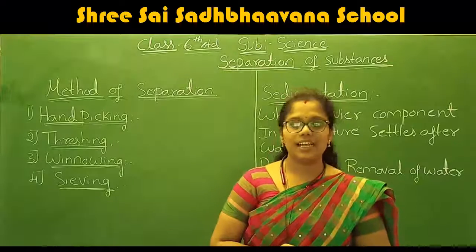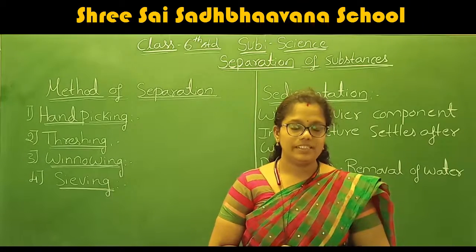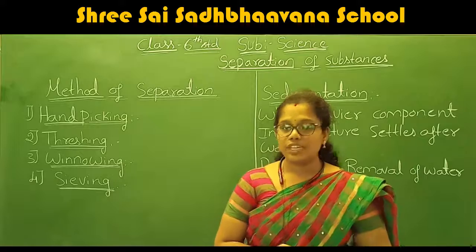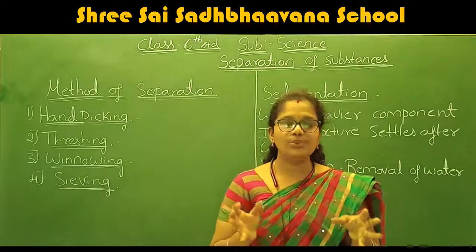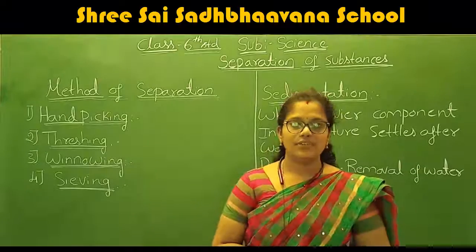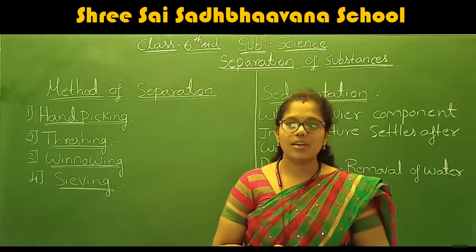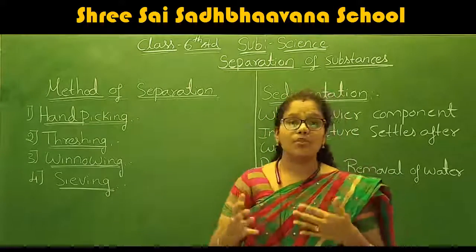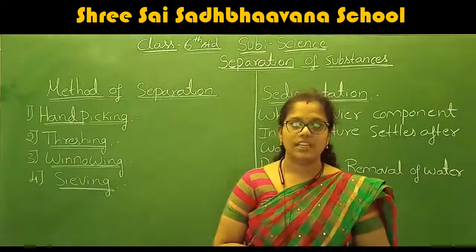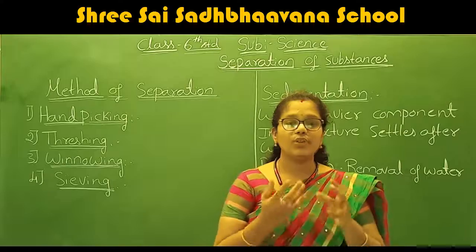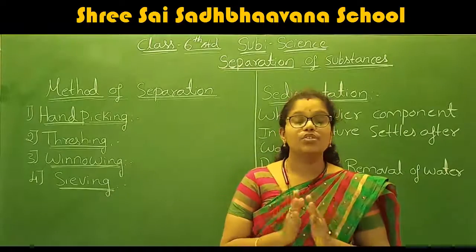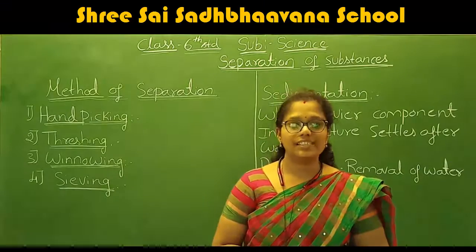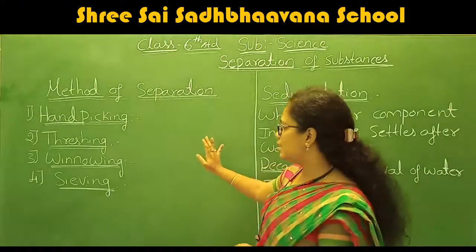Threshing can be seen in the agricultural field. This is the second method of separation. For hand picking, small amount of force is required. But in threshing, a large amount of physical strength is required because we are beating the substance to separate it. In the threshing process, we beat the substance to get it separated.